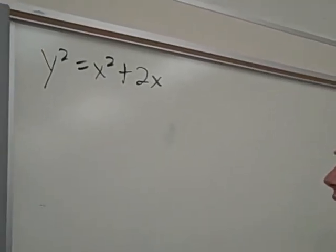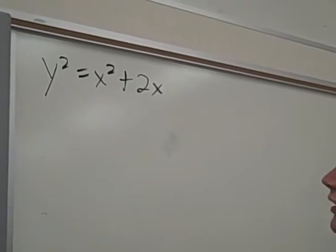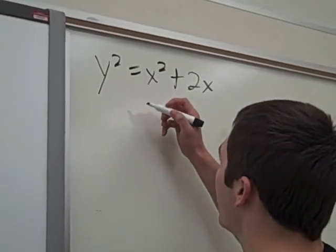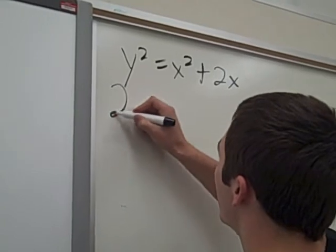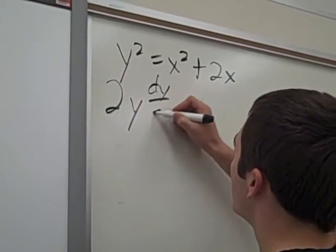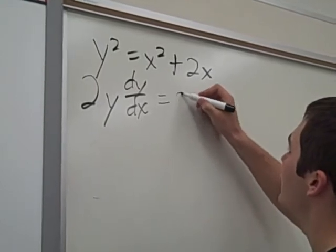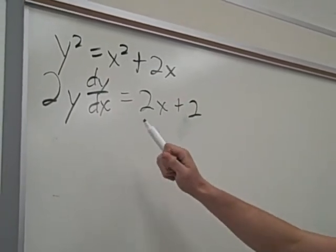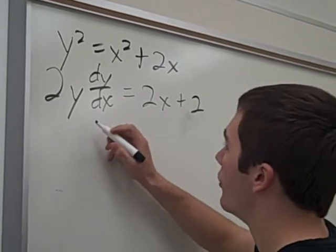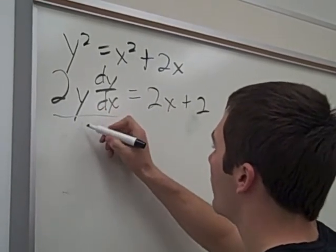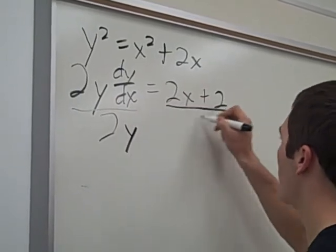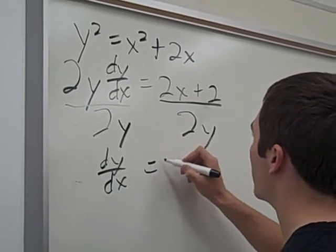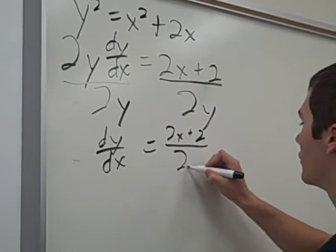Now we're going to take the second derivative of this equation, y squared equals x squared plus 2x. Because taking the derivative once just isn't fun enough. So we start out, derivative of y squared is 2y dy dx equals 2x plus 2. Now we collect all the dy dx terms, which have already been collected on one side. So we can divide both sides by 2y.